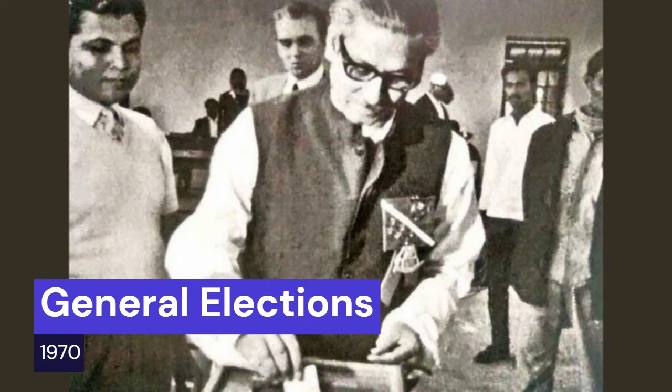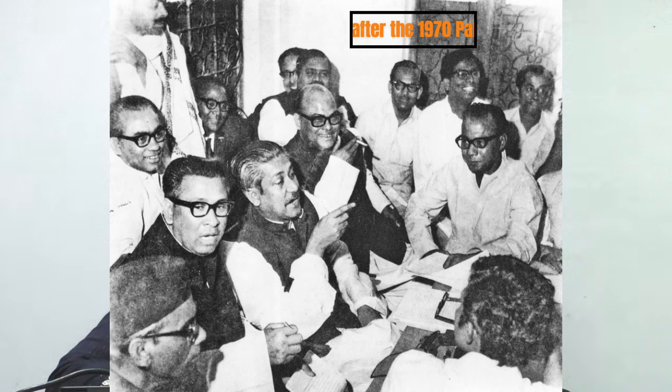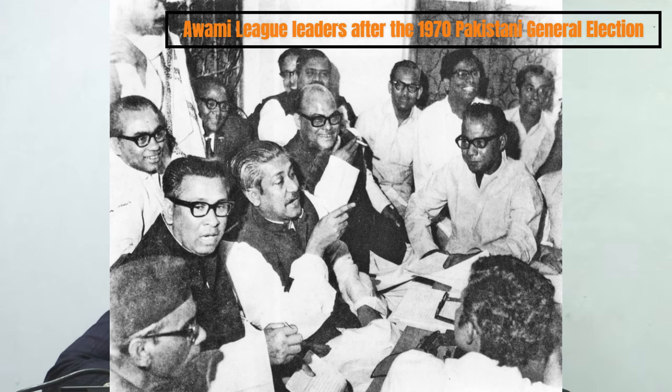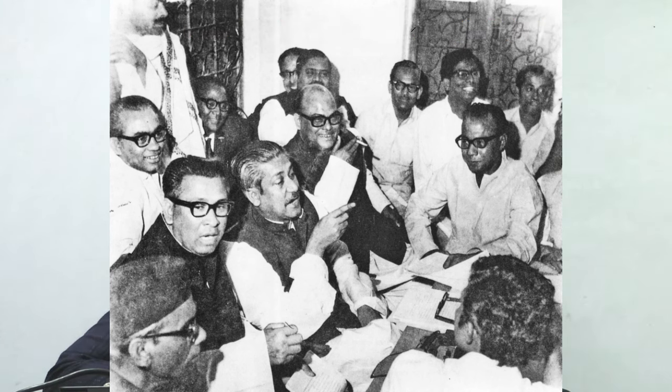In the general elections held in the 1970s, the Awami League party got a clear majority. The Awami League party, which had risen to power, aspired to lead the civilian government in Pakistan. But the army was not ready to transfer power to the Awami League party.